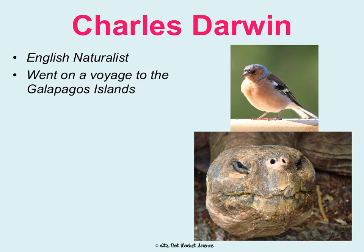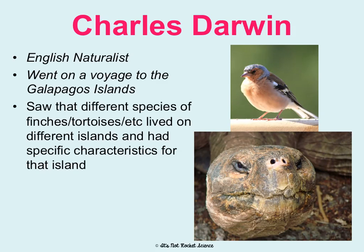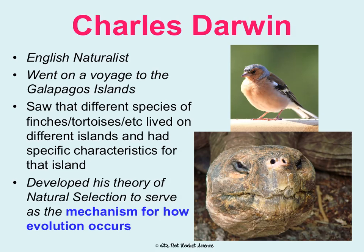Darwin was an English naturalist who loved to study nature. He went on a voyage to the Galapagos Islands, and while there on different islands, he observed different species of finches — little birds — as well as different species of tortoises, beetles, and other organisms. He saw that they all looked different on different islands and had adapted specific traits for their specific island environment. He used all these observations to develop his theory of natural selection, which is the mechanism for how evolution occurs — it explains how evolution happens.